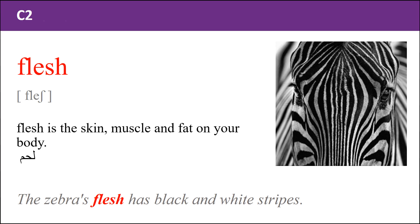Flesh. Flesh is the skin, muscle, and fat on your body. The zebra's flesh has black and white stripes.